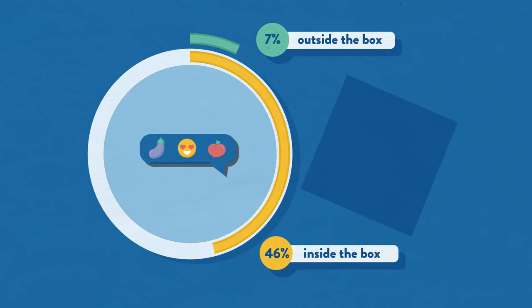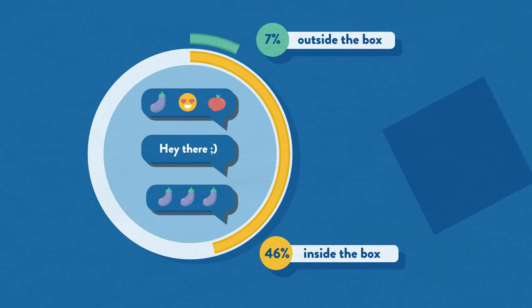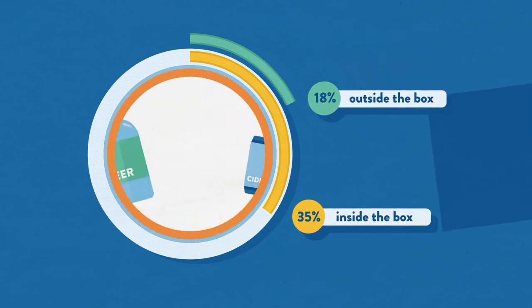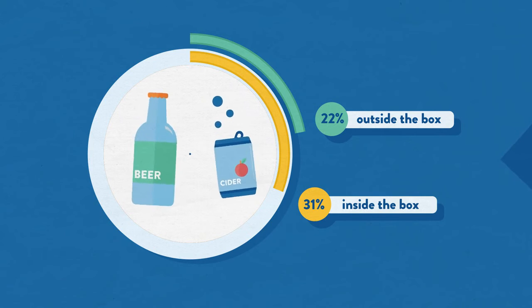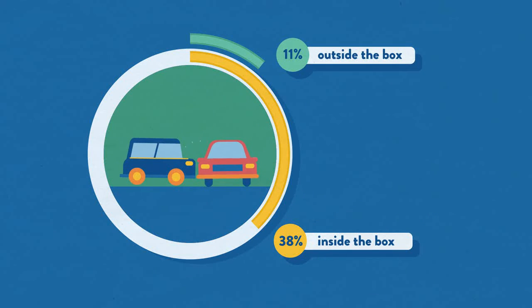46% made sexual comments to a woman or girl they didn't know, compared to 7%. 31% get drunk once a month or more, compared to 22%. And finally, 38% have been in a car accident in the past year, compared to 11% of those outside the man box.